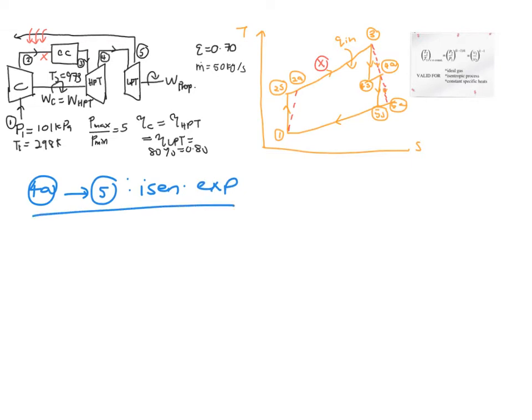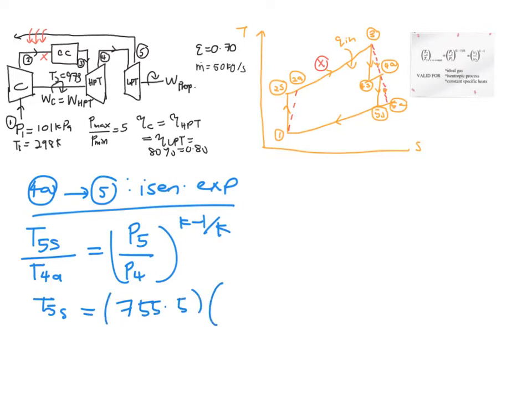Since you are looking for your T5s, it is best to place your unknown value above and the one that you know down here. So T5s over your T4a is actually P5 over your P4 raised to k-1 over k. Your T5s now is equal to T4a, which is 755.5 Kelvin, times your P5, which is actually equal to your P1, which is 101 kPa, and you have your P4 equal to 160.4 kPa, 0.4 over 1.4. Finally, you get your T5s, which is equal to 662 Kelvin.